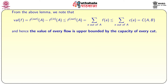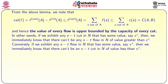From the above lemma, val(f) equals f-out(A) minus f-in(A), which is less than or equal to f-out(A), which equals the sum over edges out of A of f(e), which is less than or equal to the sum of c(e) for edges out of A — that is, the capacity c(A, B). Hence, the value of every feasible flow is upper bounded by the capacity of every cut. If we exhibit any s-t cut with capacity c*, then there cannot be any s-t flow of value greater than c*. Conversely, if we exhibit any s-t flow of value v*, there cannot be any s-t cut of value less than v*.